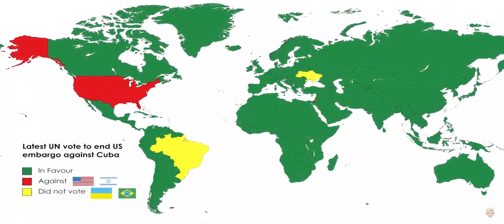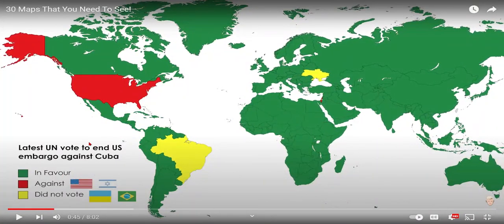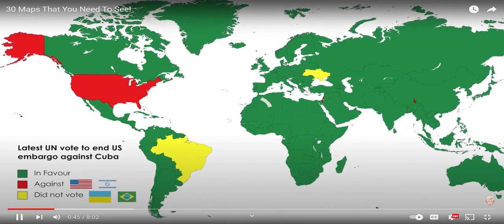This was the latest United Nations vote to end the United States embargo against Cuba. The UN voted — wait, almost everybody is in favor! Only the United States is against it again. Oh wait, there's Israel too. And Brazil and Ukraine did not vote — why did Brazil and Ukraine not vote?